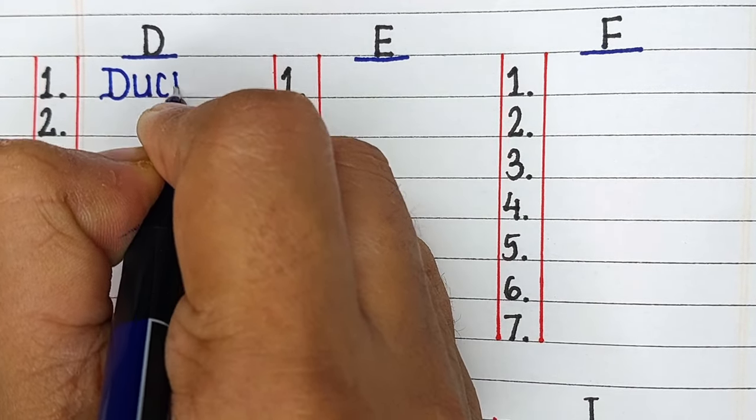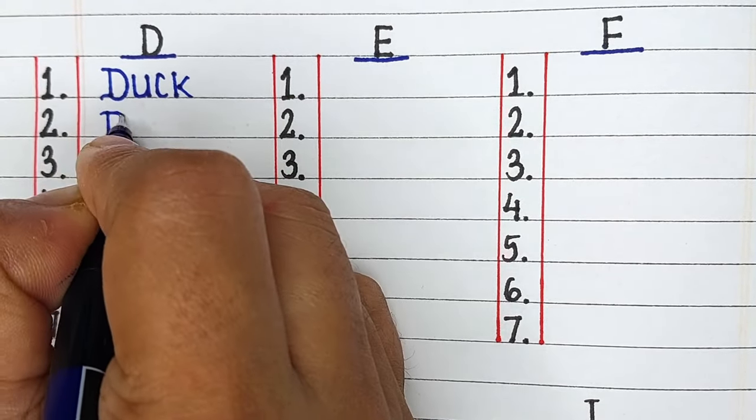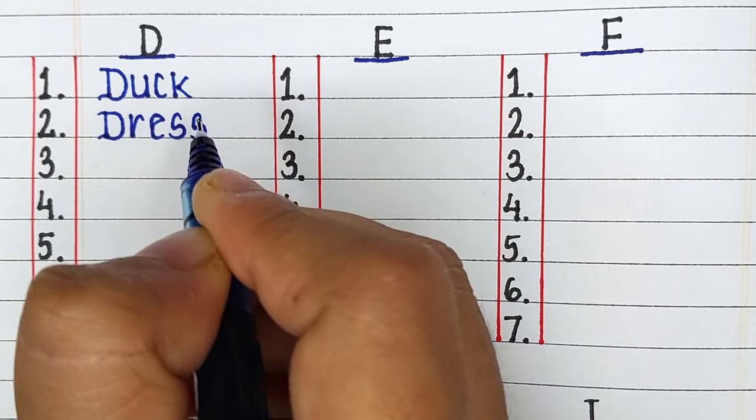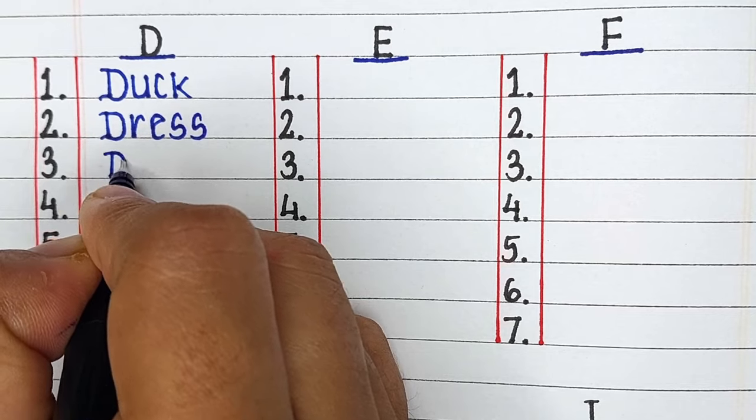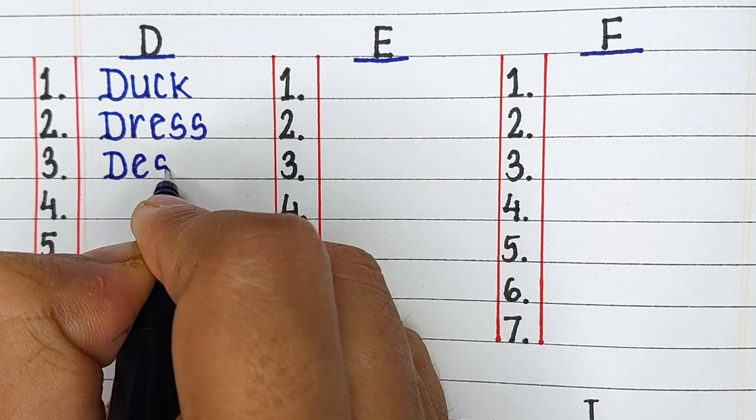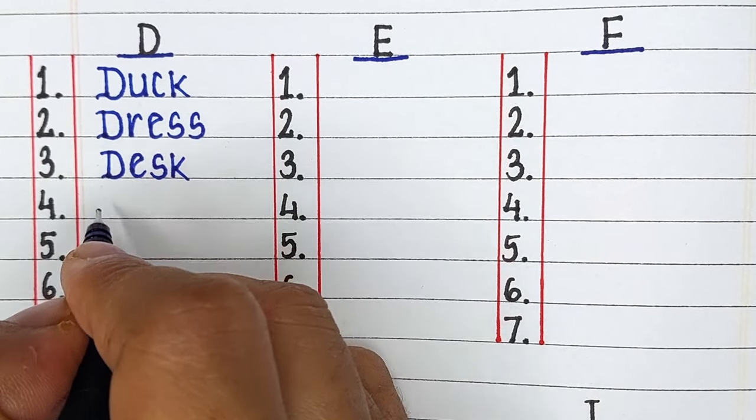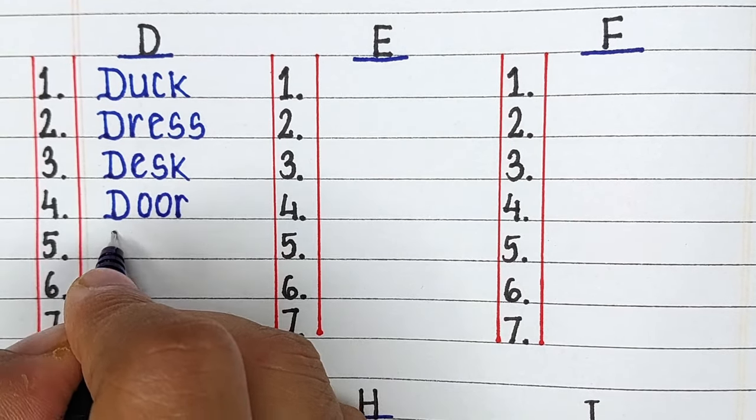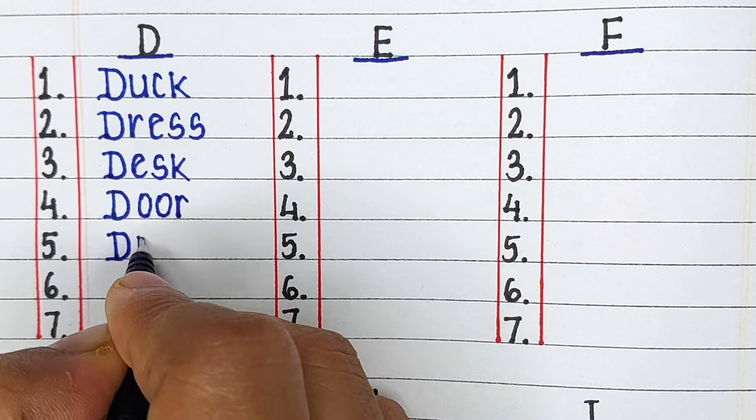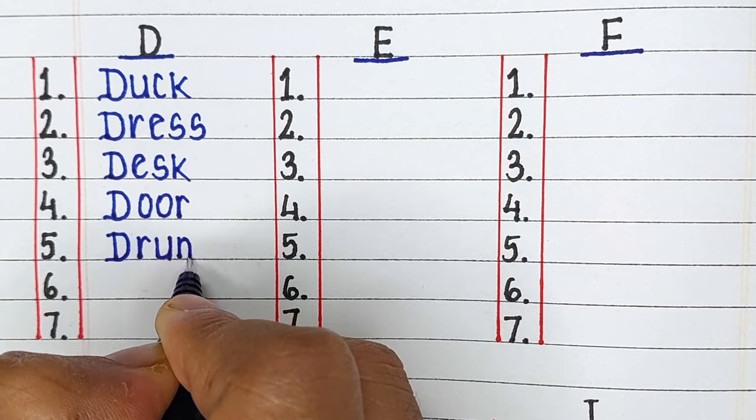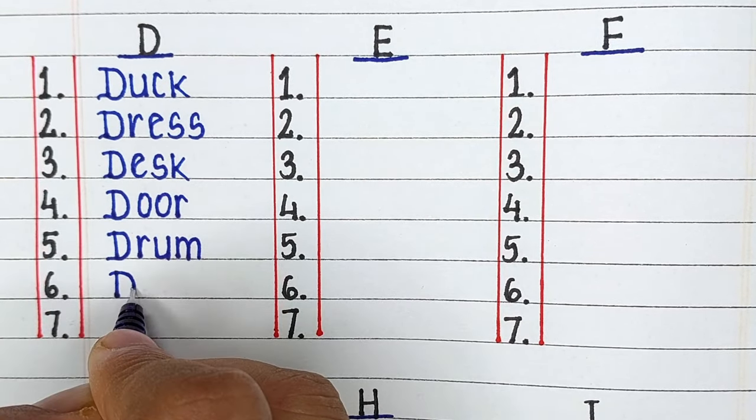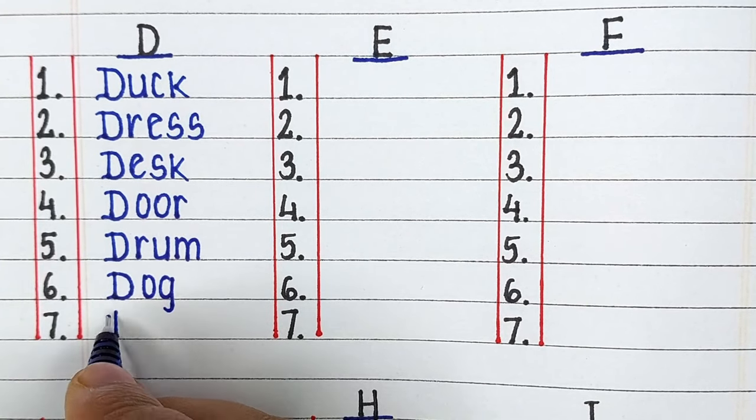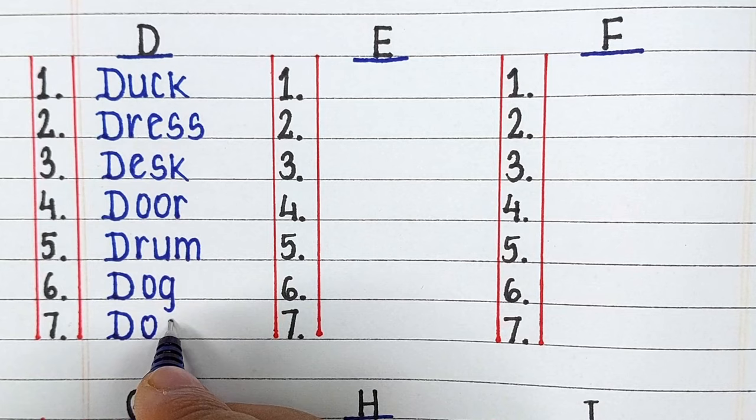Next up we have Alphabet D. The words starting from letter D are Duck, Dress, Desk, Door, Drum, Dog and Doctor.